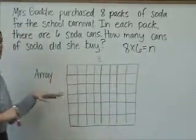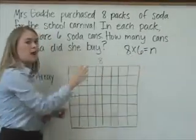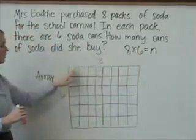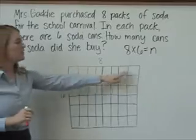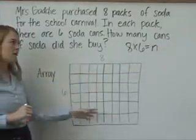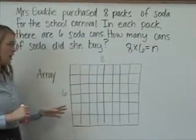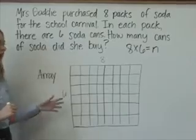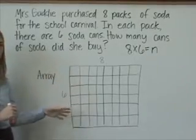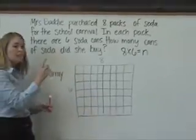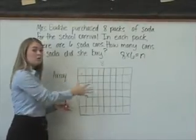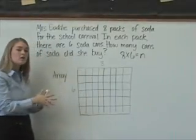An array is constructed using the two factors in the problem, with 8 being the number of columns and 6 being the number of rows to comprise the array. To figure out the total number of squares, in the early stages students might simply count by ones to figure out the total number of smaller squares.